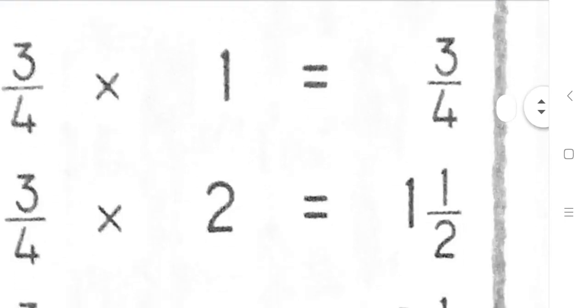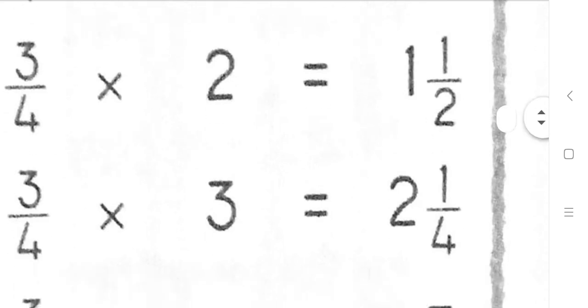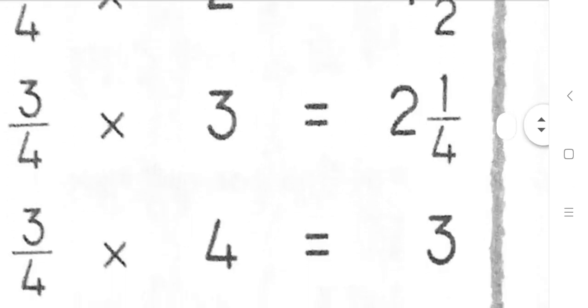3 quarters 1s are 3 quarters. 3 quarters 2s are 1 and a half. 3 quarters 3s are 2 and a quarter. 3 quarters 4s are 3.